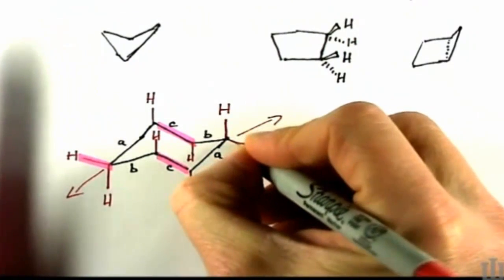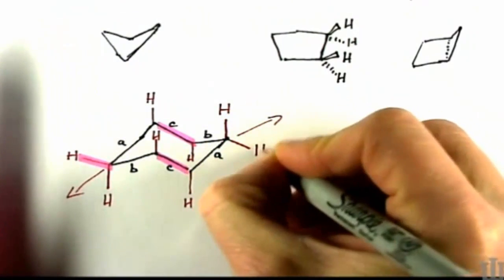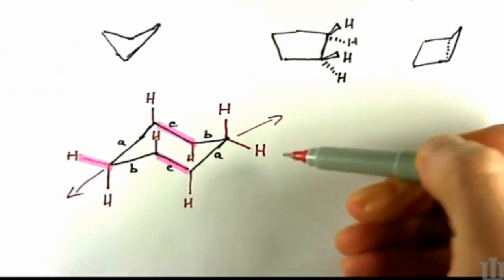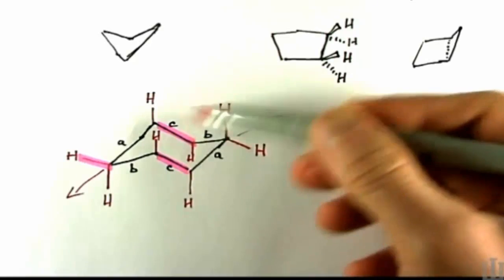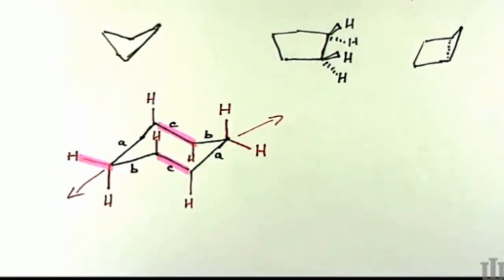And so if I go over to the opposite side of the molecule, this equatorial hydrogen's going to be pointing down, and it's also going to be parallel to the bonds labeled C.